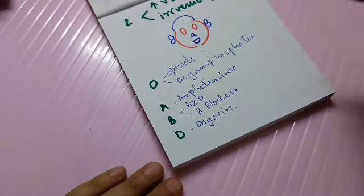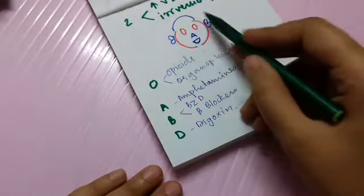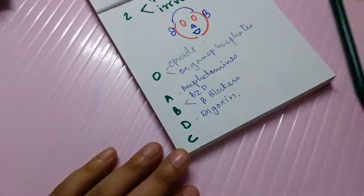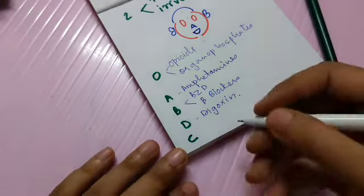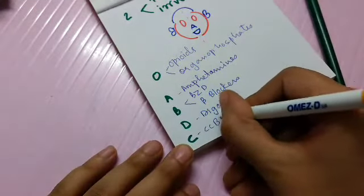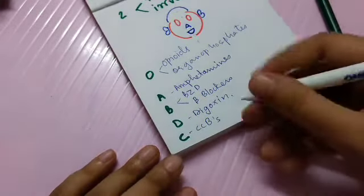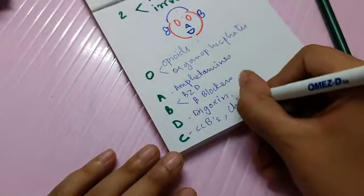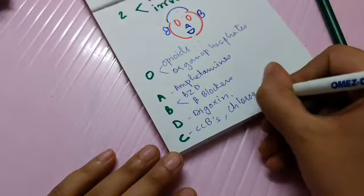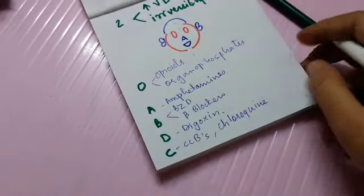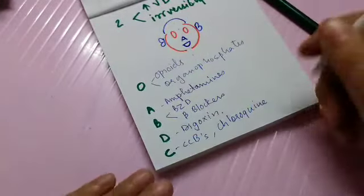And then come these three C's. So this is for calcium channel blockers, just like the beta blockers. Another drug is chloroquine. And the third, the cap drug, is carbamates.